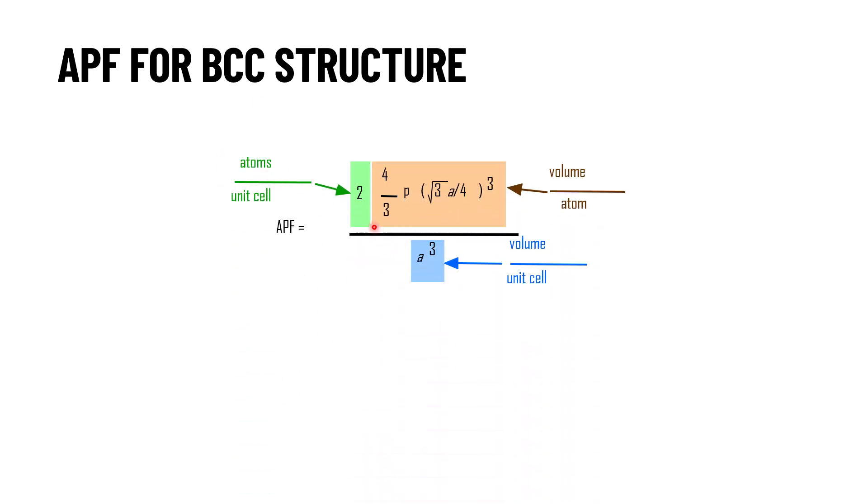As we have seen, there are 2 atoms in a given unit cell. So 2 multiplied by 4 by 3 pi r cube. 4 by 3 pi r cube is the formula to calculate the volume of hard sphere. In our case, we have seen value of R radius is nothing but root 3a divided by 4. Here for APF, we are having a formula 2 multiplied by 4 by 3 pi root 3a by 4, it is cube divided by volume of unit cell. We have seen it is nothing but a cube.